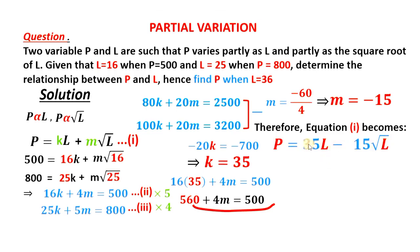Equation 1 will therefore become P is equal to 35L minus 15 root L. Remember 35 here is K, and negative 15 here is M. And therefore, this is the relationship between P and L. Just as we have been told, determine the relationship between P and L.